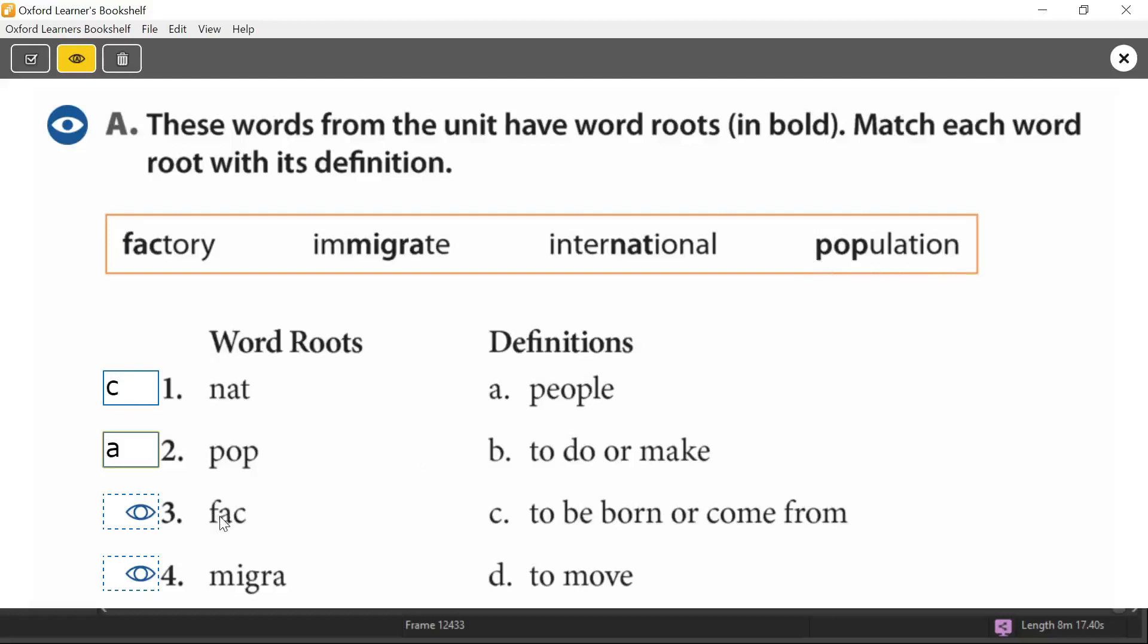FAC. And that is F-A-C. To make. To do or make. Let's look for the word here. Yes, factory. F-A-C. Factory. And in a factory, we make things. We make products. Factory. F-A-C.